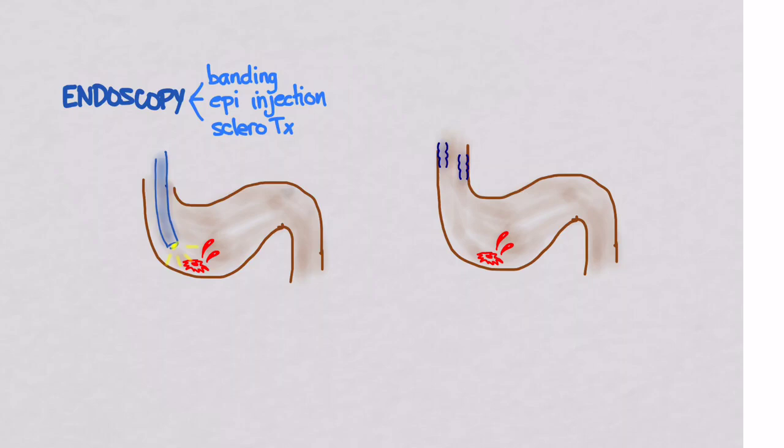For variceal bleeding, you can try balloon tamponade. You insert a special catheter down into the esophagus near the varices, and then you inflate a balloon right on top of them, hopefully tamponading them. The problem with this is that it could cause perforation or even aspiration. So it's not without some serious complications.